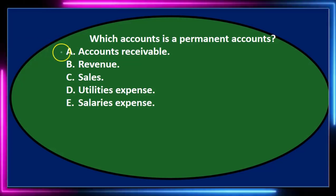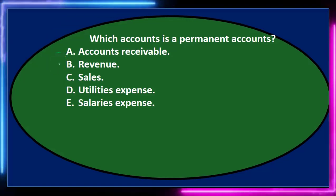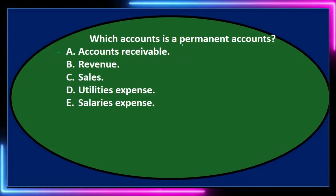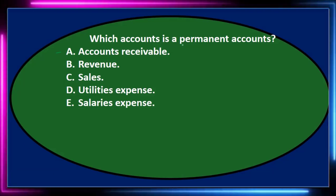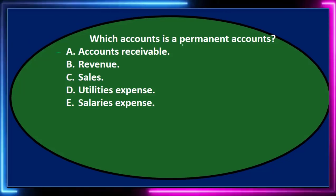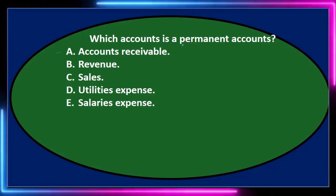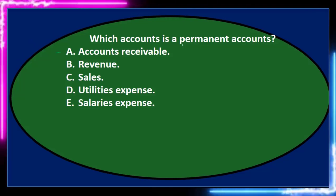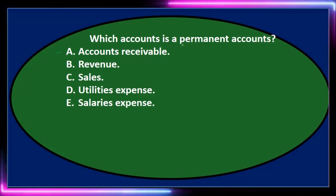Accounts receivable — I'm going to leave that; that looks pretty good. Now we need to define what a permanent account is — those are accounts that don't close out at the end of the process. Permanent accounts stay; temporary accounts close. The shortcut is that balance sheet accounts are permanent and do not close out to zero within the closing process, while income statement accounts are temporary and do close to zero. There's also the exception of draws, which is an equity account that also closes and is also a temporary account.